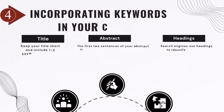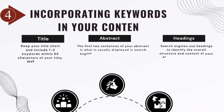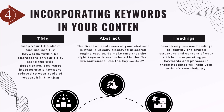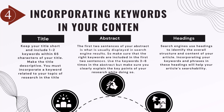Step 4: Incorporating Keywords in Your Content. For the Title: keep it short and include one to two keywords within 65 characters. Make the title descriptive and incorporate a keyword related to your topic of research. For the Abstract: the first two sentences are usually displayed in search engine results, so include the right keywords there. Use keywords three to six times in the abstract while clearly explaining the key points of your research. For Headings: search engines use headings to identify the overall structure and content of your article, so incorporating your keywords and phrases in headings will help your article's searchability.